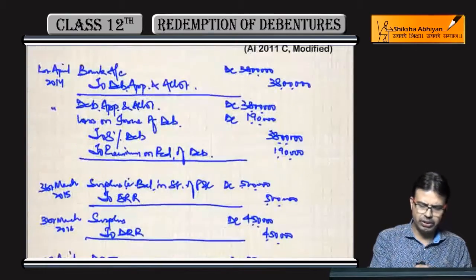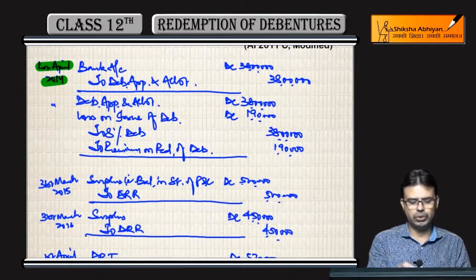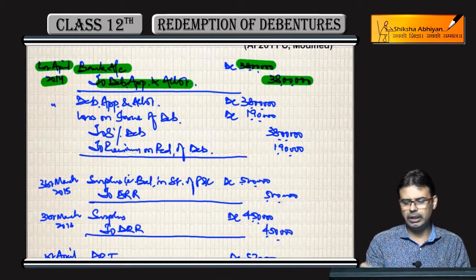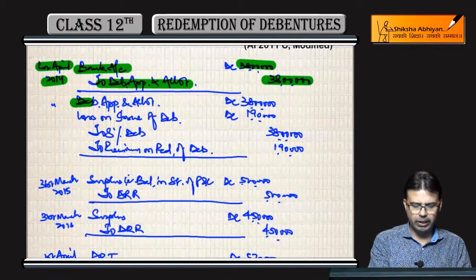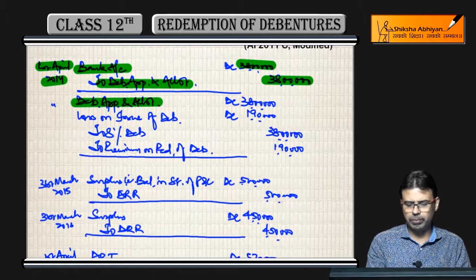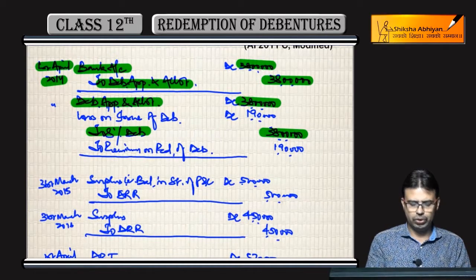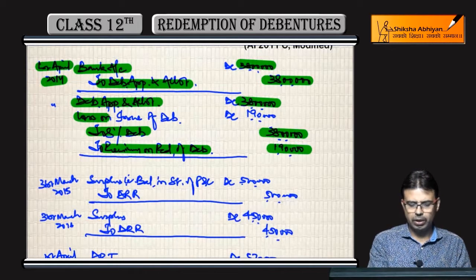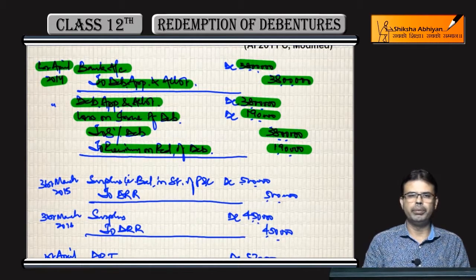Let us start. On 1st April 2014, debenture issued: Bank A/c debit to Debenture Application & Allotment A/c ₹38 lakh. Then Debenture Application & Allotment A/c debit ₹38 lakh to Debentures A/c ₹38 lakh. Since debentures are redeemable at 5% premium, Premium on Redemption A/c is credited and Loss on Issue of Debentures A/c is debited.